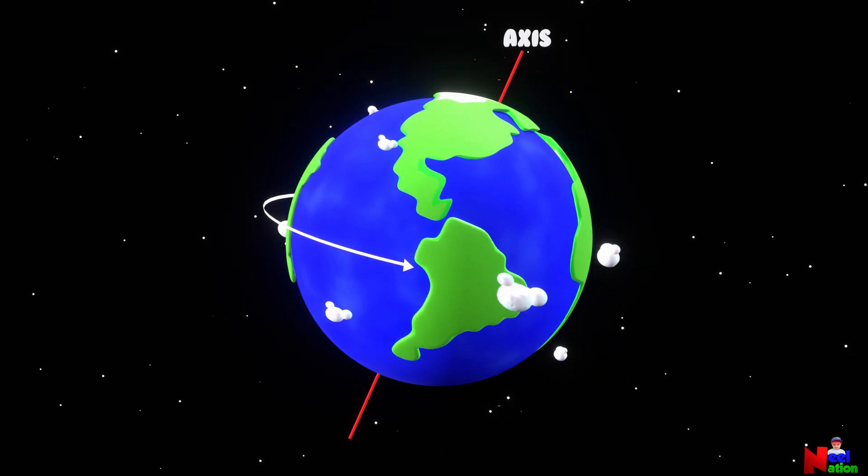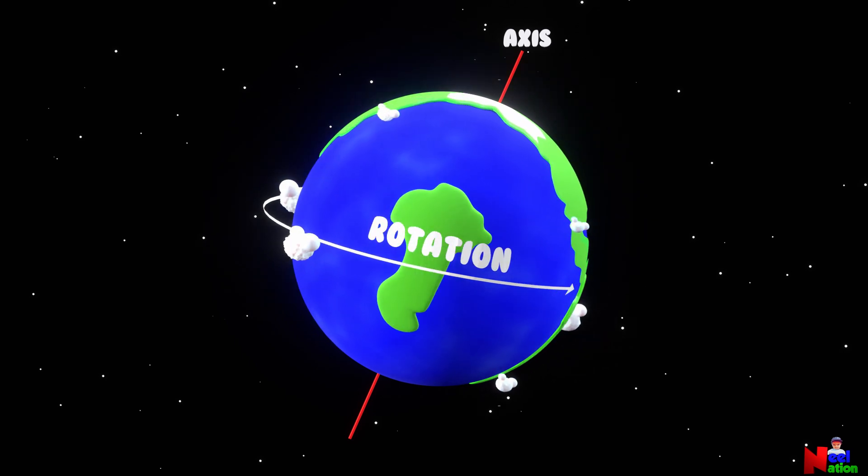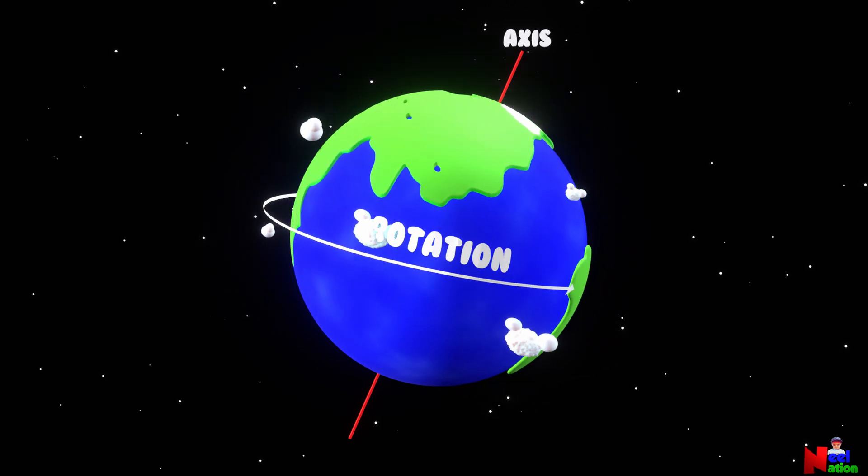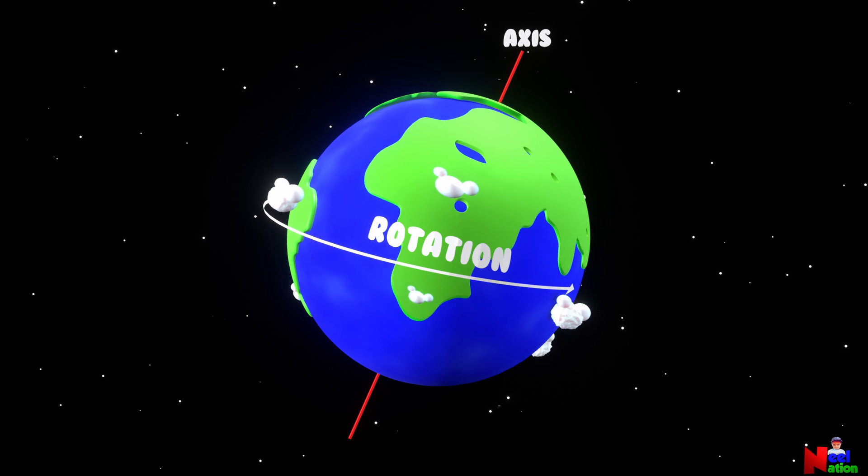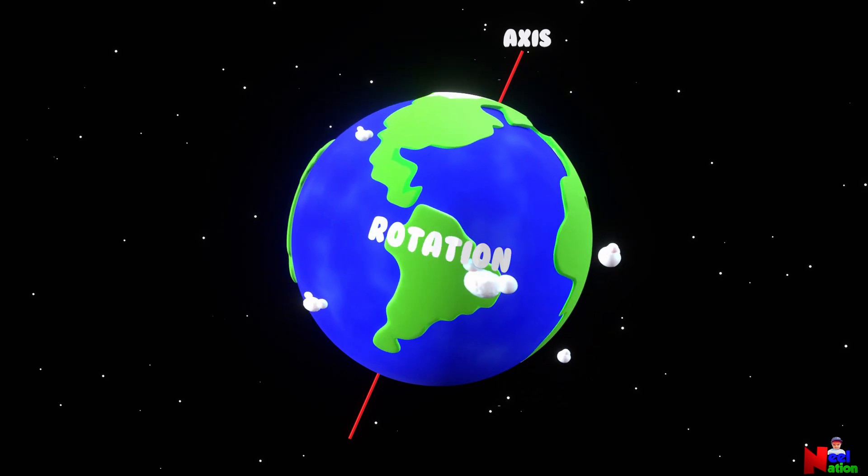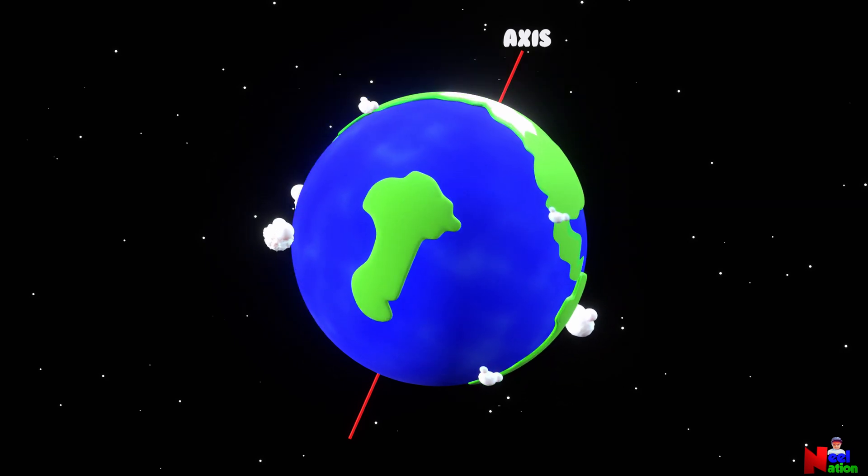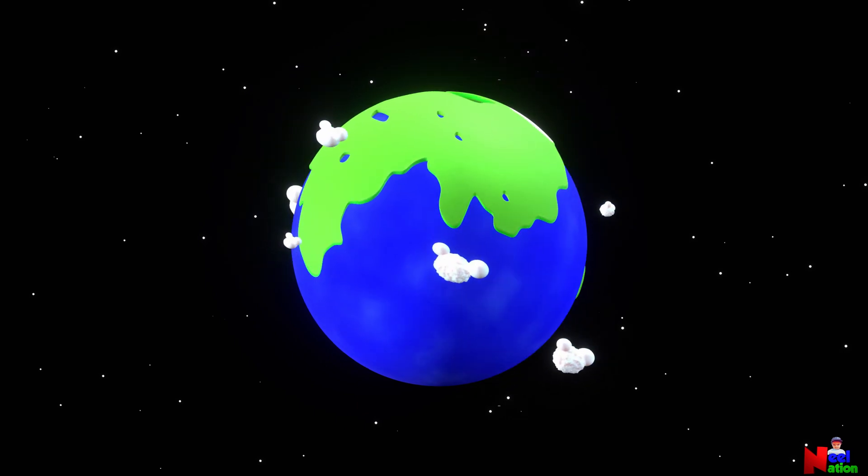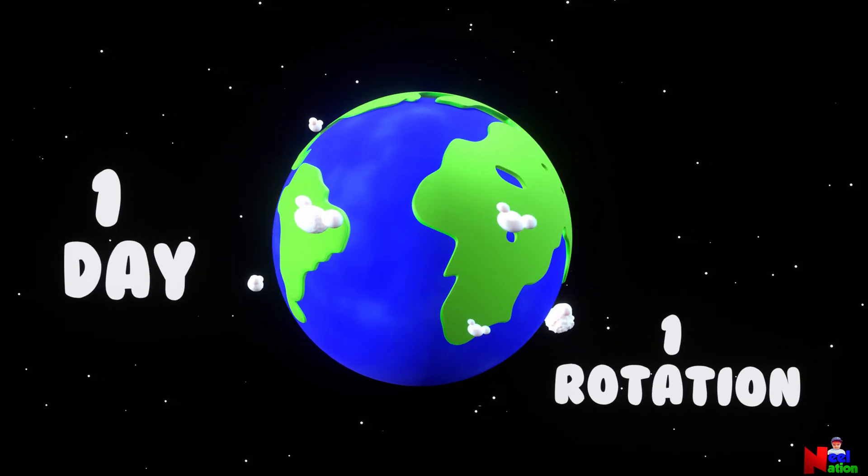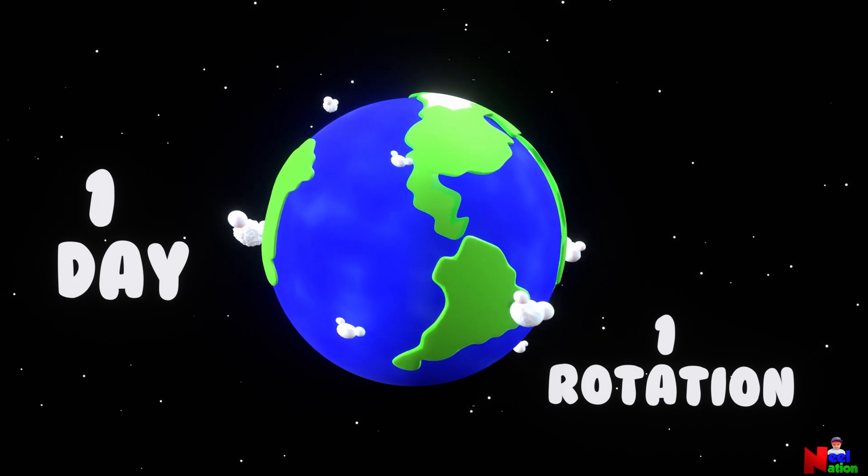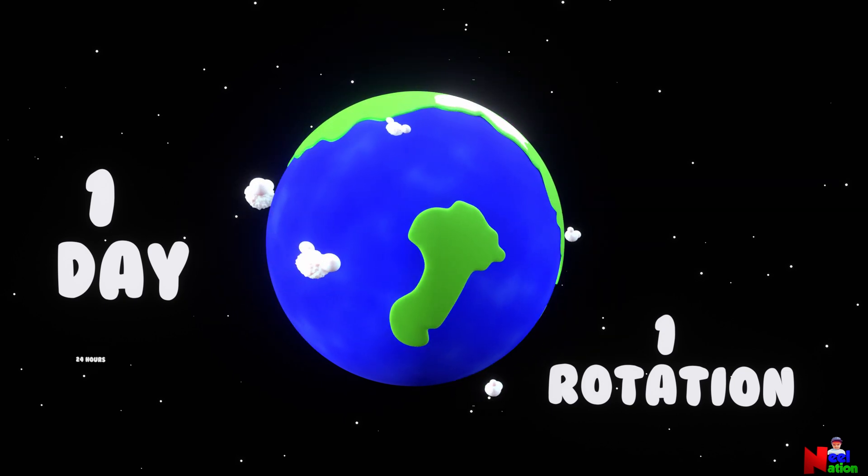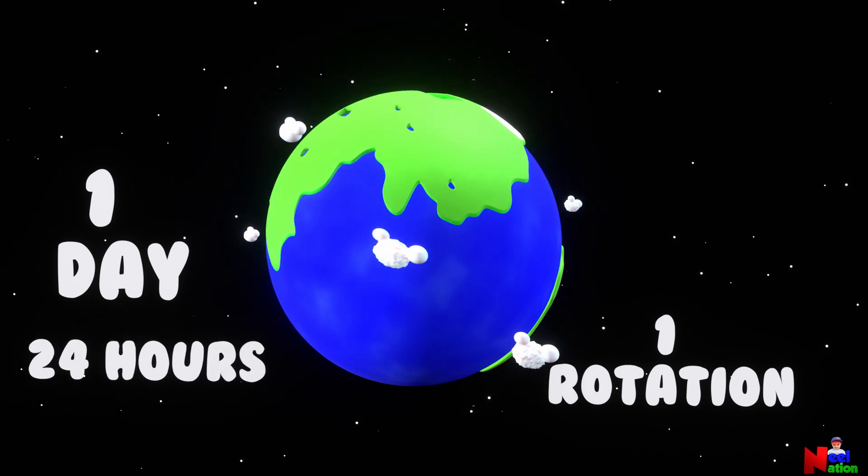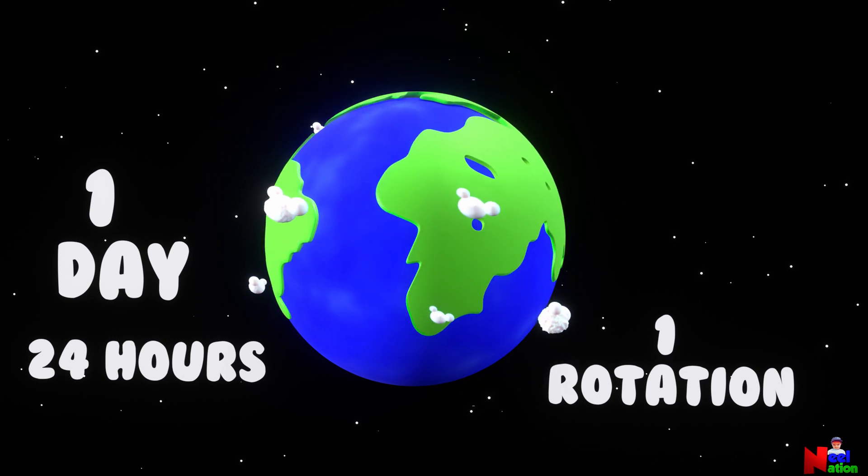The movement of Earth on its axis is called rotation. The Earth takes one whole day to complete one rotation. That is a total of 24 hours.